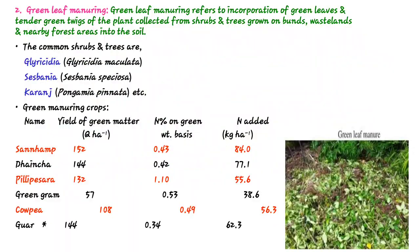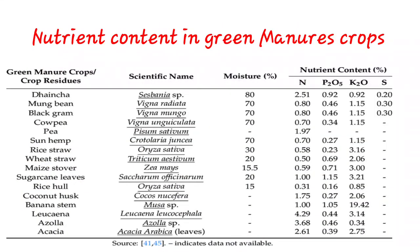Next is nutrient content in green manure crops — very important for objective-type examination questions. The chart shows crop residues with their scientific names, moisture percentage, and nutrient content including macronutrients nitrogen, phosphorus, potassium, and secondary nutrient sulfur. Notably, Leucaena leucocephala contains 4.29% nitrogen, 0.44% phosphorus (P₂O₅), and 3.14% potassium — the highest NPK content among those listed. Remember the names, scientific names, and NPK content from that chart.